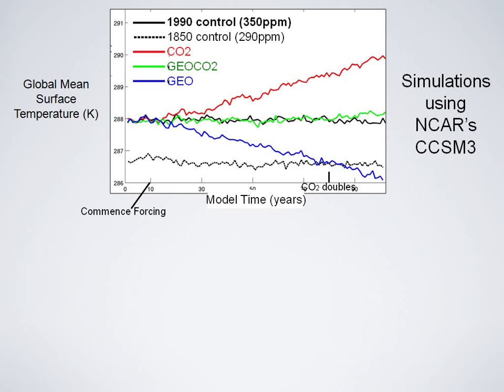The simulations I investigated are shown here as a time series of global mean surface temperature. The solid black line is the modern control with 350 ppm CO2. The dashed line is the pre-industrial control for reference. The red line is NCAR's run with CO2 ramping at 1% per year. I ran a geo run where I ramped the sulfate layer burden so that at any given time the radiative forcing is equal and opposite to the CO2 forcing. When you put the two forcings together, you get the green line — global mean surface temperature is canceled throughout the simulation, keeping surface temperatures right on the control.